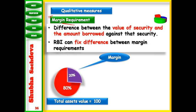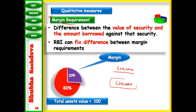RBI fixes the margin requirement and it can increase the margin as well as decrease it. For example, if the total asset value is 100, you will get 80% as a loan and you have to keep 20% extra. That means if you want to get a loan of one lakh, you have to keep collateral worth more than one lakh — it can be one lakh twenty thousand, one lakh fifty thousand, one lakh ten thousand. It depends.